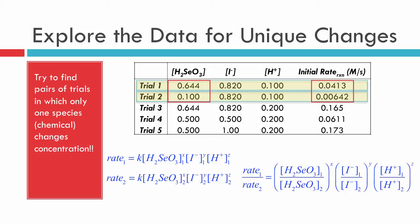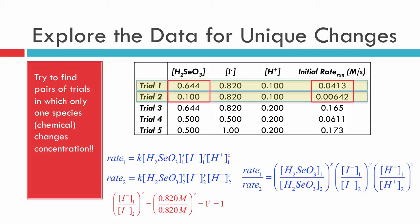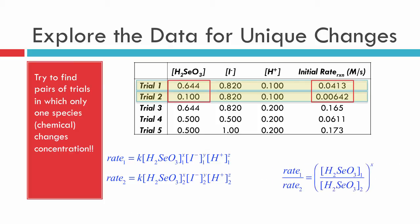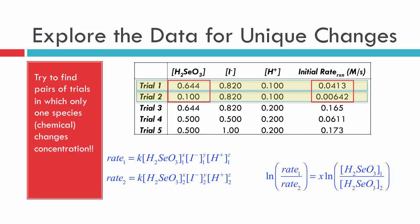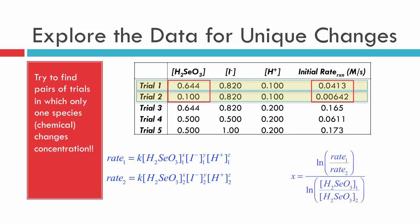It gets even simpler when we realize that for iodide, plugging in the actual values gives 0.82 divided by 0.82, which equals one — and one raised to any power is still one, so that term equals one. Similarly, the H⁺ terms are the same concentration in both trials, so they also equal one. We can ignore those terms, leaving us with a clean relationship between the ratio of rates, the ratio of concentrations, and the power x.